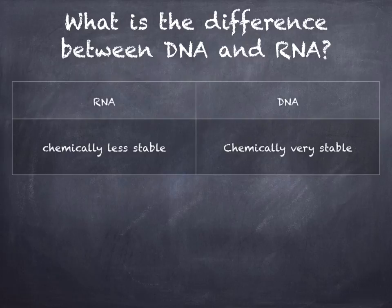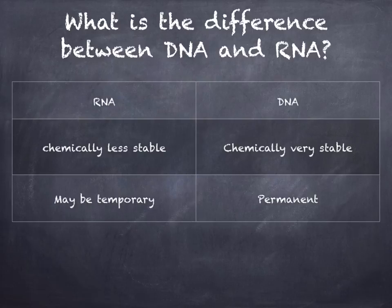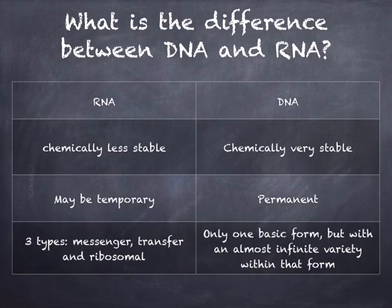RNA is chemically less stable, whilst DNA is chemically very stable. RNA may be temporary, whilst DNA is permanent. There are three types of RNA: messenger RNA, transfer RNA, and ribosomal RNA. For DNA, there is only one basic form, but with an almost infinite variety within that form.